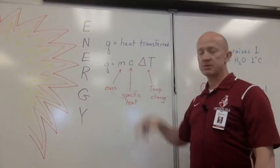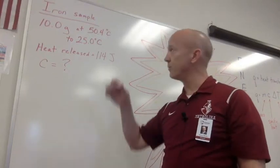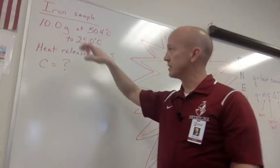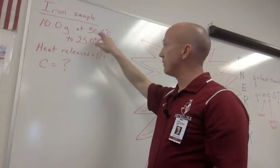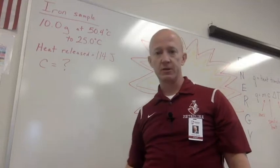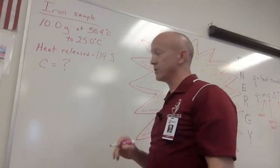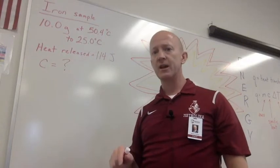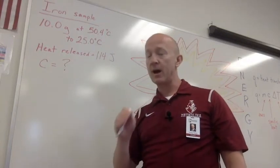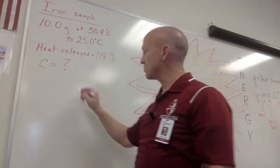So q equals mass times specific heat times a change in temperature. Here's a good example problem. Let's say we have a sample of iron and it's a 10 gram sample. It starts out at 50.4 degrees Celsius and it releases heat to 25 degrees Celsius. The heat released as it turns out is 114 joules.